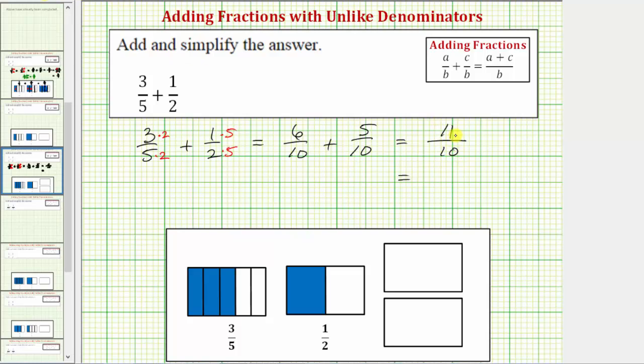So to write the improper fraction as a mixed number, we divide the numerator by the denominator. So we have eleven divided by ten. There's one ten in eleven. One times ten is ten. We subtract. We have a remainder of one. So eleven tenths equals one and one tenth.